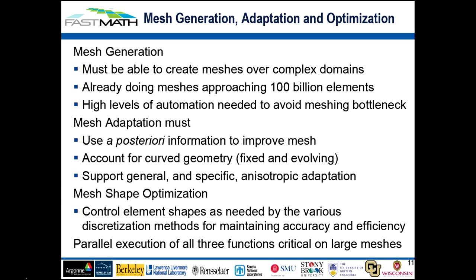We want to support general anisotropic adaptation. Mesh shape optimization is important — in all discretization methods there is a degree of sensitivity to element shapes. Depending on the discretization method, the severity can be larger or smaller. Some finite volume procedures can be very sensitive to element shapes, requiring strong optimization. Some techniques like stabilized finite elements are less sensitive, so we might take more liberties. We need to know what that is and have tools to control it.